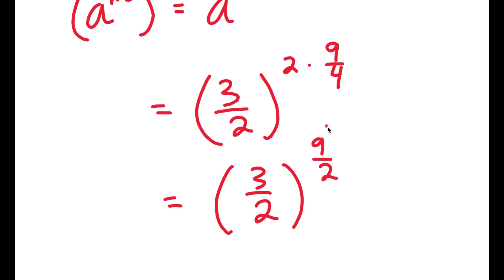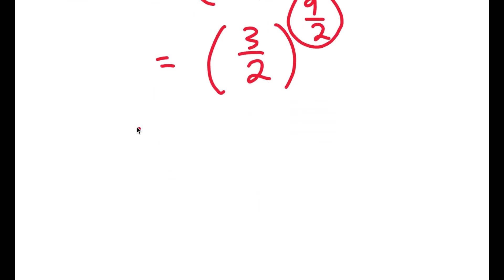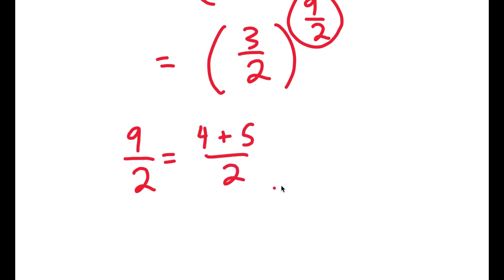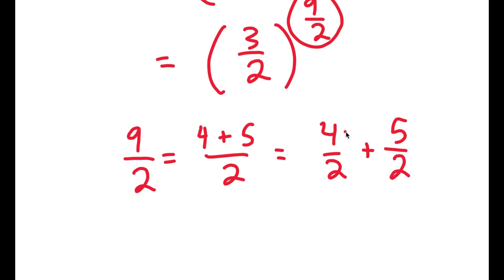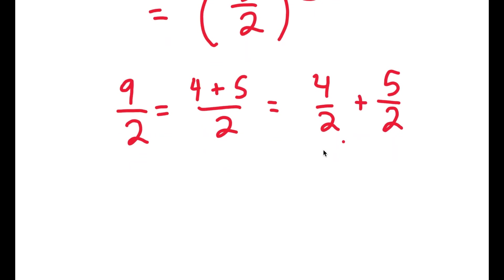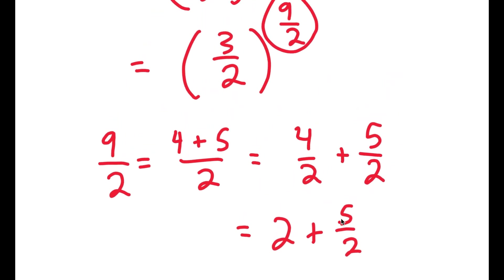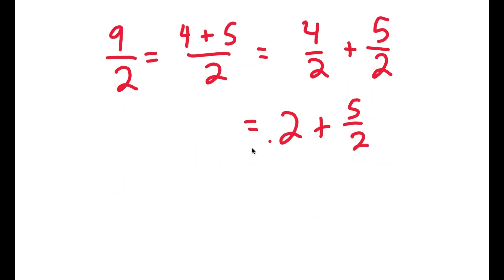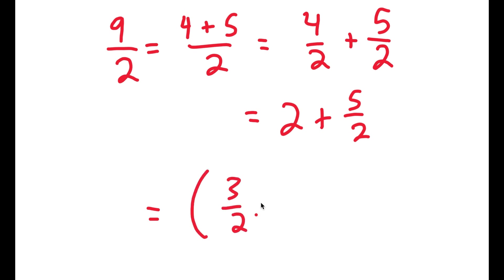Now I'm going to rewrite 9 over 2. So 9 over 2 is the same thing as 4 plus 5 over 2. And 4 plus 5 over 2 is equal to 4 over 2 plus 5 over 2. And 4 over 2 is simply equal to 2, so I get 2 plus 5 over 2. Now I'm going to substitute in 2 plus 5 over 2 in place of 9 over 2, so I get 3 over 2 to the power of 2 plus 5 over 2.